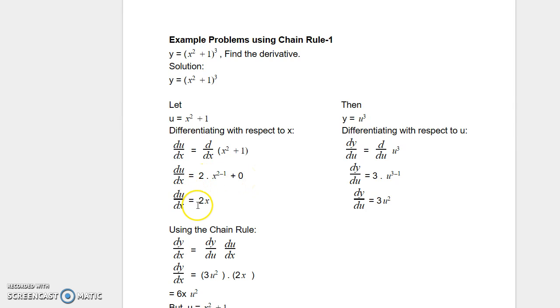When we simplify it further it simplifies to 2x. 2 times x^(2-1) simplifies to 2x.